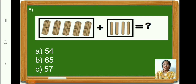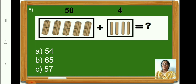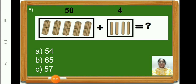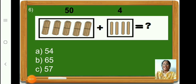Children, count and see how many tens are there in the left hand side box. Yes, there are 5 tens. 5 tens means 50. Now, count and see how many ones are there in the right hand side box. Yes, 4 ones. Therefore, here we have to add 50 plus 4. 50 plus 4 is equal to 54. Therefore, let us put a tick for the correct option A.